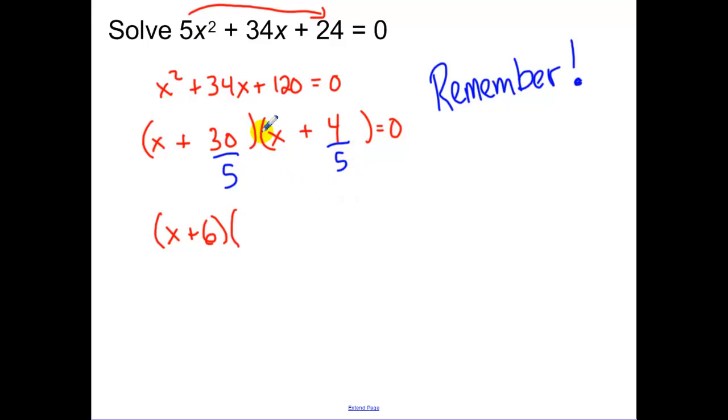So thirty divided by five is six. The five, since four over five doesn't simplify, the five swings up and becomes a coefficient. So now you set each one of your factors equal to zero.